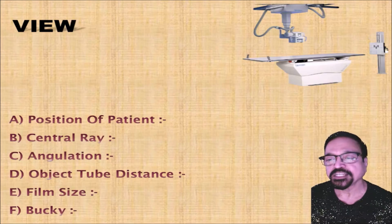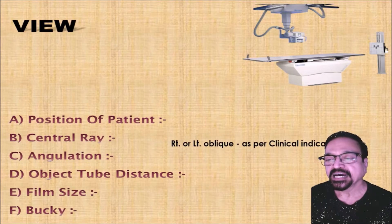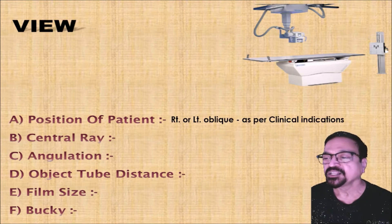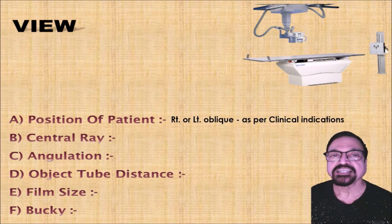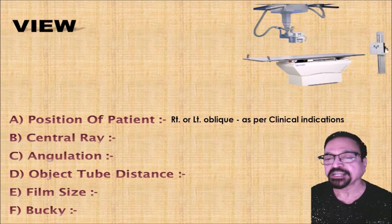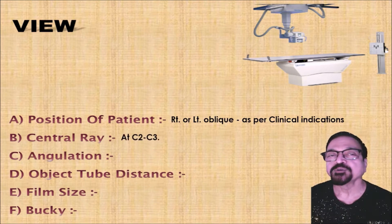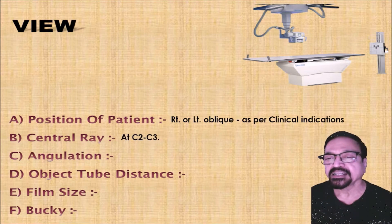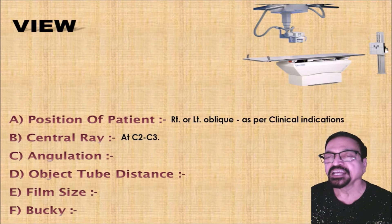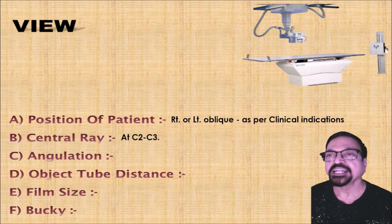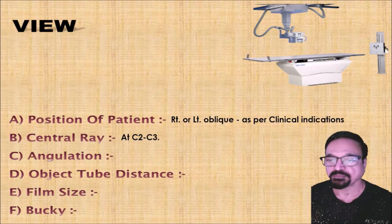For the cervical oblique, the patient position is usually right or left oblique as per the clinician's indication. By and large, both sides are taken so that we can get a symmetrical view. These can be taken either in the standing position or in the supine position using the bucky. Angulation is 0 degrees.